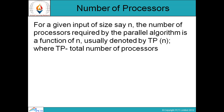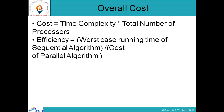The second factor is number of processors. For a given input size n, the number of processors required by the parallel algorithm is a function of n, usually denoted by tp, where tp is the total number of processors. The third factor is overall cost, defined as time complexity multiplied by the total number of processors. Efficiency is equal to the worst case running time of the sequential algorithm divided by the cost of the parallel algorithm.